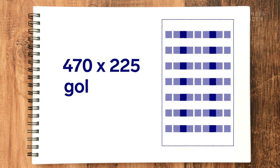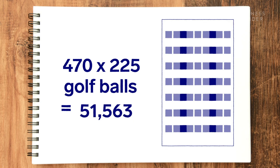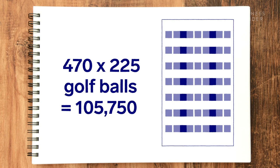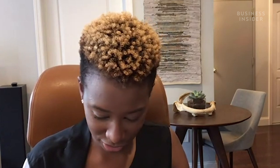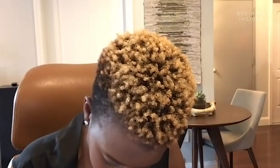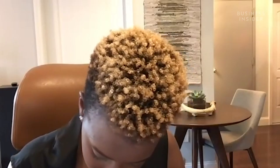470 seats times 225 golf balls gives me 105,750 golf balls. Then 10 seats times 18 inches is 180 inches; times 80 rows is 14,400 inches, which gives me 1,200 feet. Now we have to incorporate circulation.